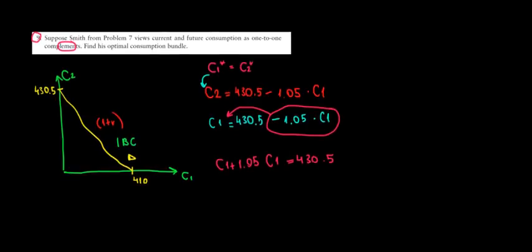So consumption one plus 1.05 consumption one would be 2.05 because the coefficient here is just one. So that's 2.05 times consumption in the first period equals to 430.5.